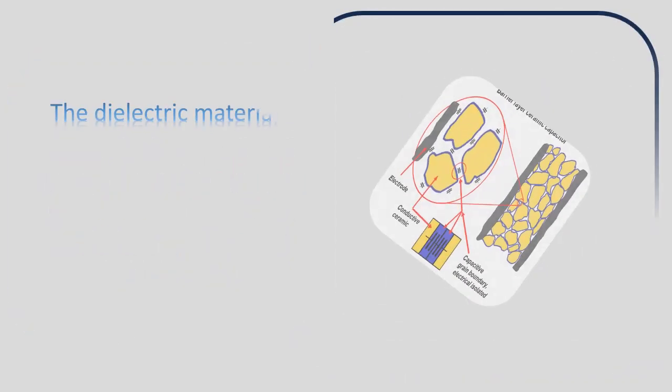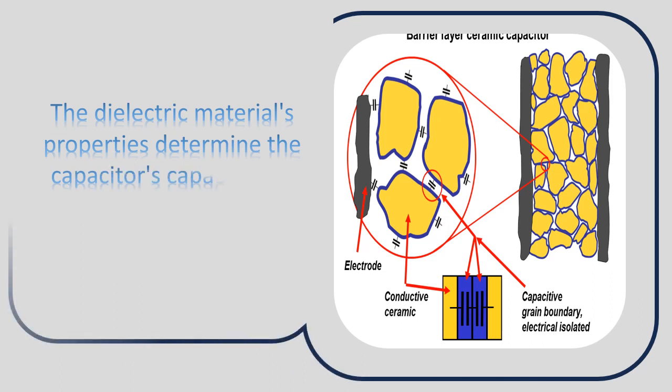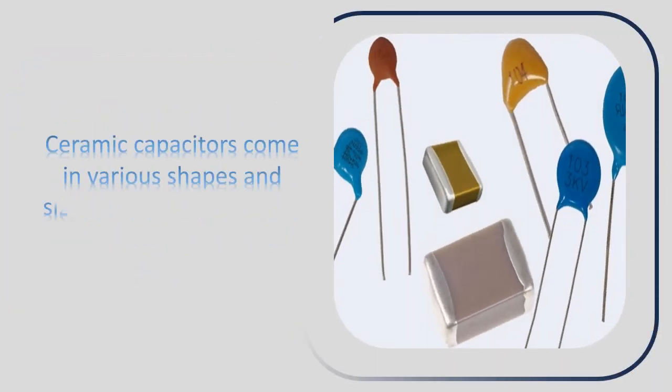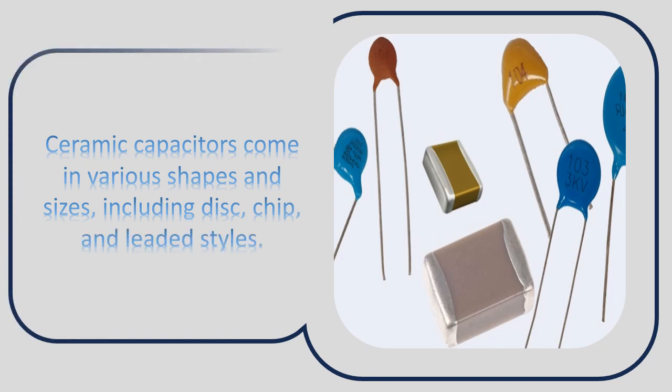The dielectric material's properties determine the capacitor's capacitance, which is a measure of its ability to store electrical charge. Ceramic capacitors come in various shapes and sizes, including disc, chip, and leaded styles.